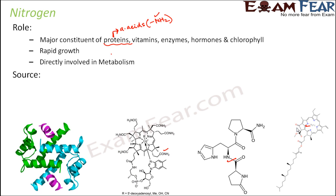When you talk about the source of nitrogen — how do plants get nitrogen — one source is through fertilizer application. The consumption of nitrogen by a plant is huge, so plants take in all the nitrogen present in the soil, and therefore the soil becomes deficient in nitrogen. Somebody needs to enrich the soil with nitrogen again, and that is done by the application of fertilizer rich in nitrogen.